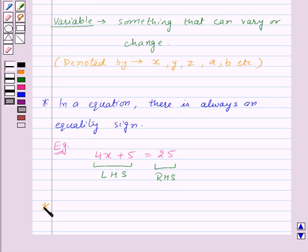Now if there is some sign other than the equality sign between the LHS and RHS, like the greater than sign or less than sign, then it is not an equation. For example, 4x plus 5 greater than 25 is not an equation.